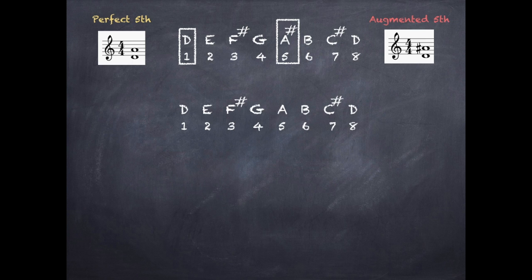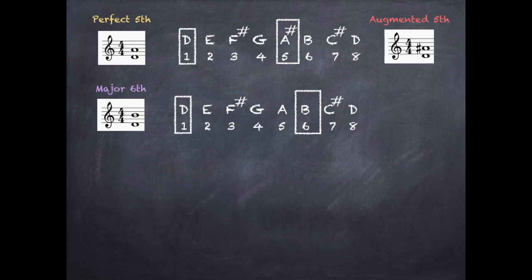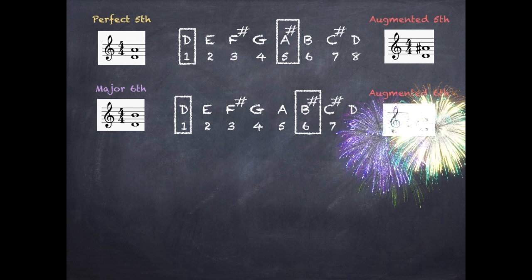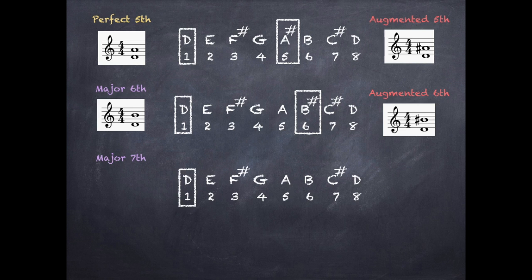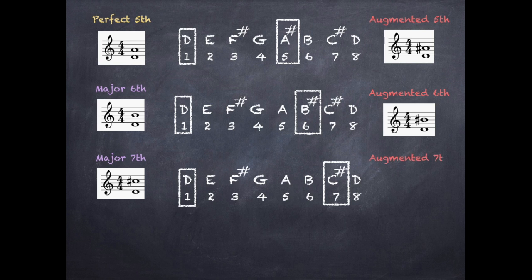To create an augmented sixth, first work out a major sixth interval. We go from the first note of the D major scale to the sixth note, D to B. To augment the sixth, sharpen the top note of the major sixth, so B becomes B sharp. To create an augmented seventh, first write a major seventh. We go from D to the seventh note of the major scale, which is C sharp. To create an augmented seventh, sharpen the seventh note — C sharp becomes C double sharp — and stack them on the stave.